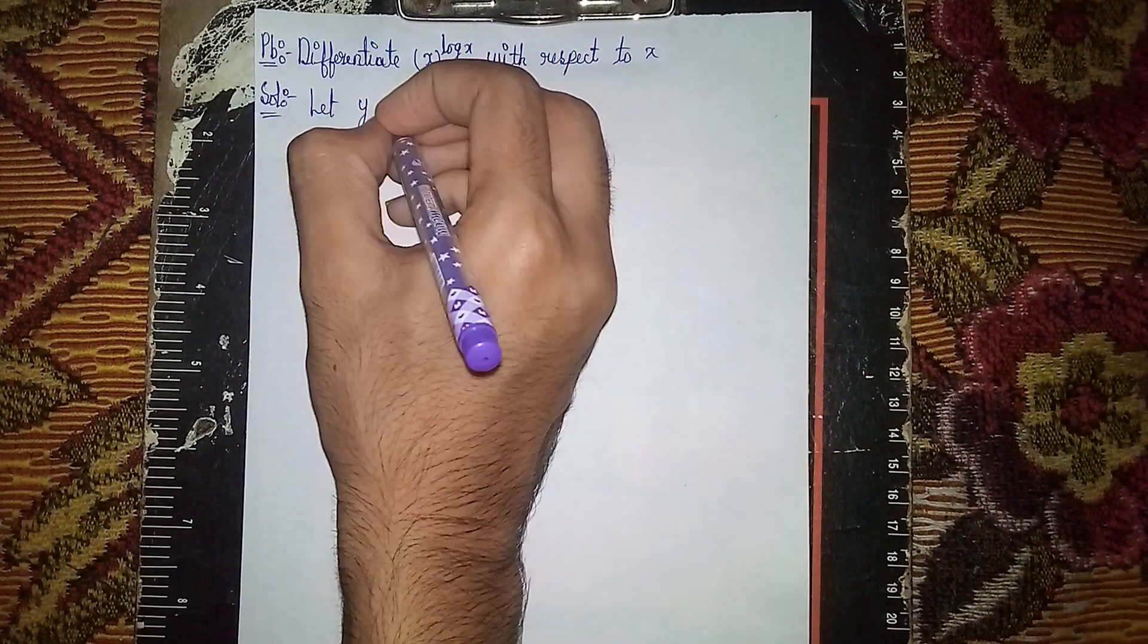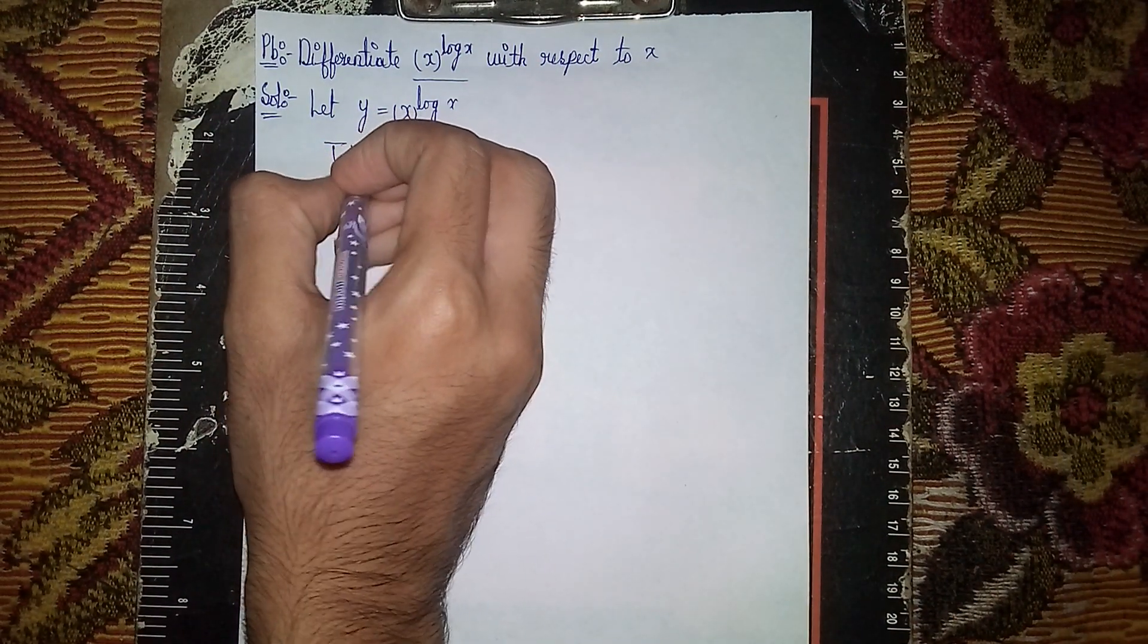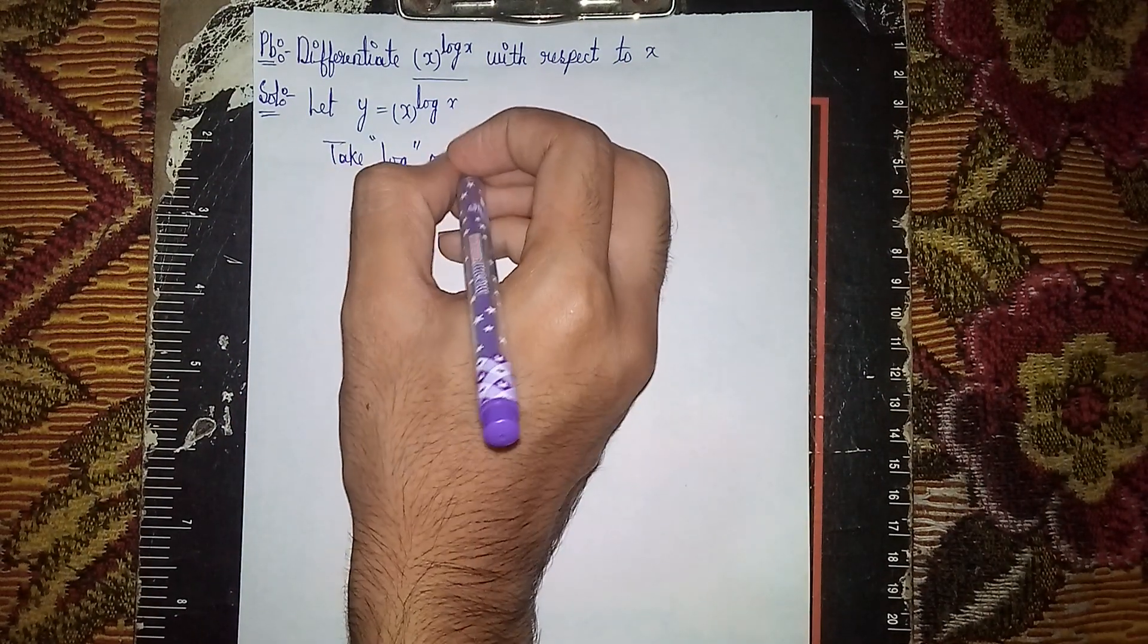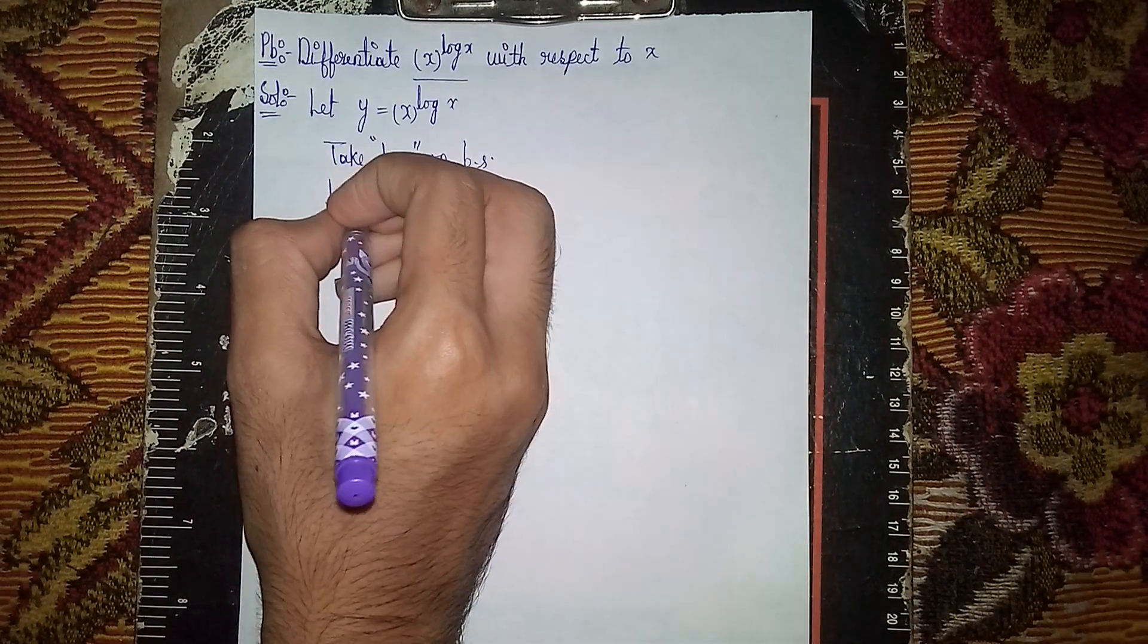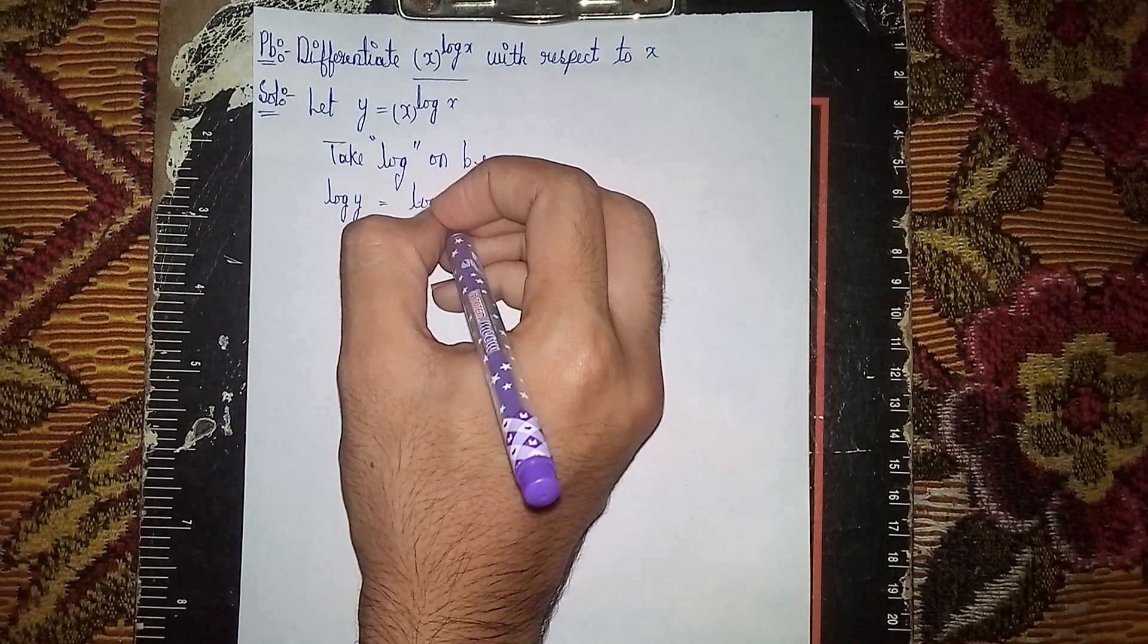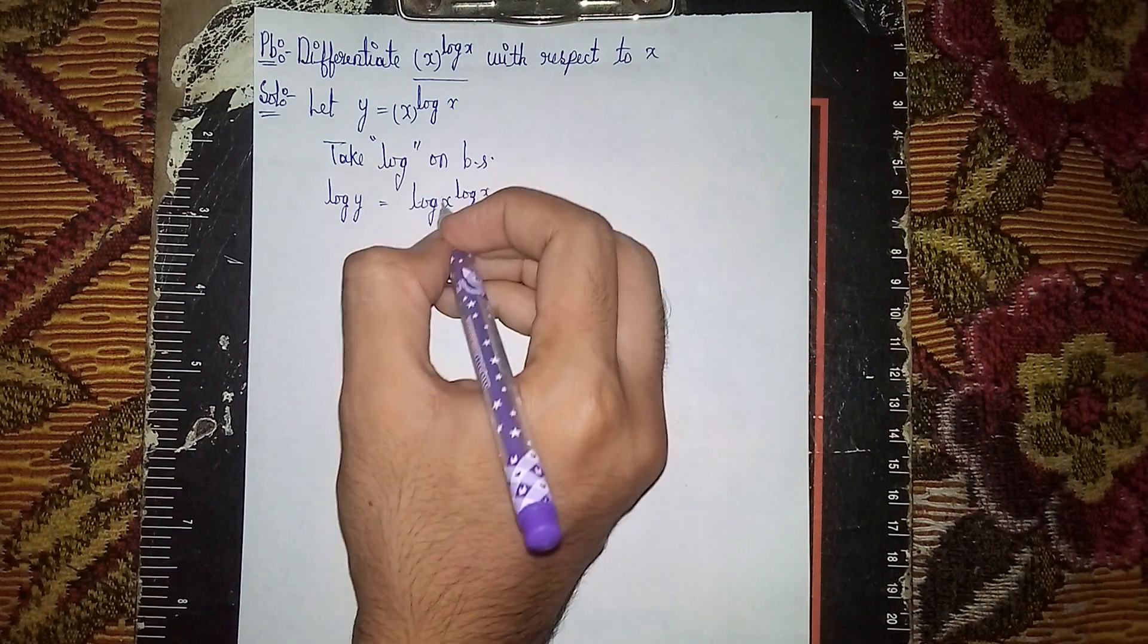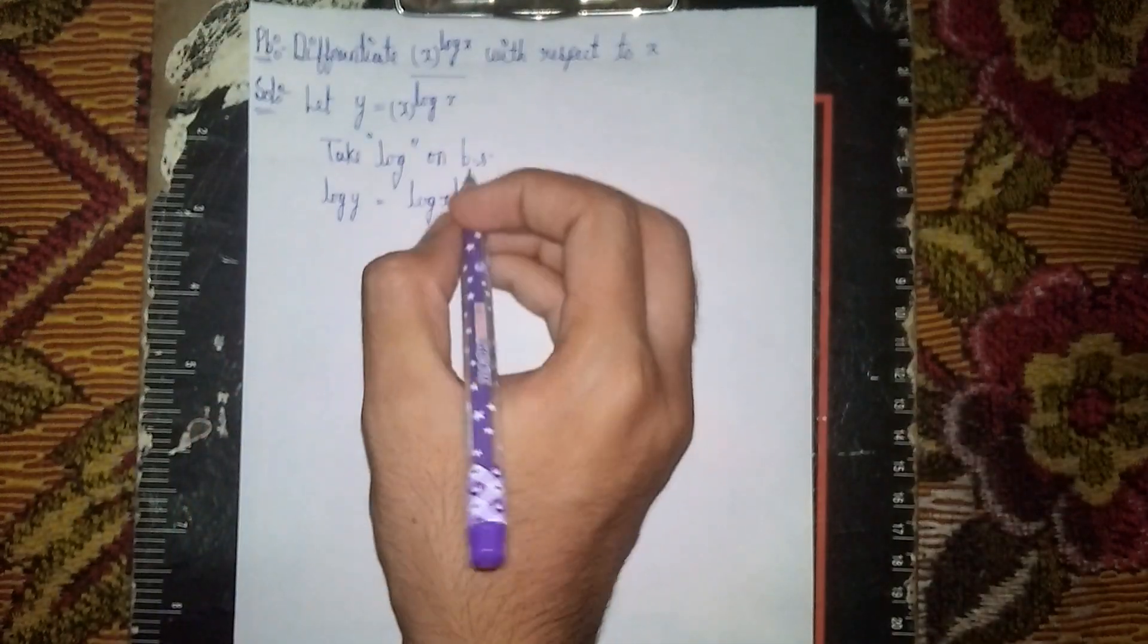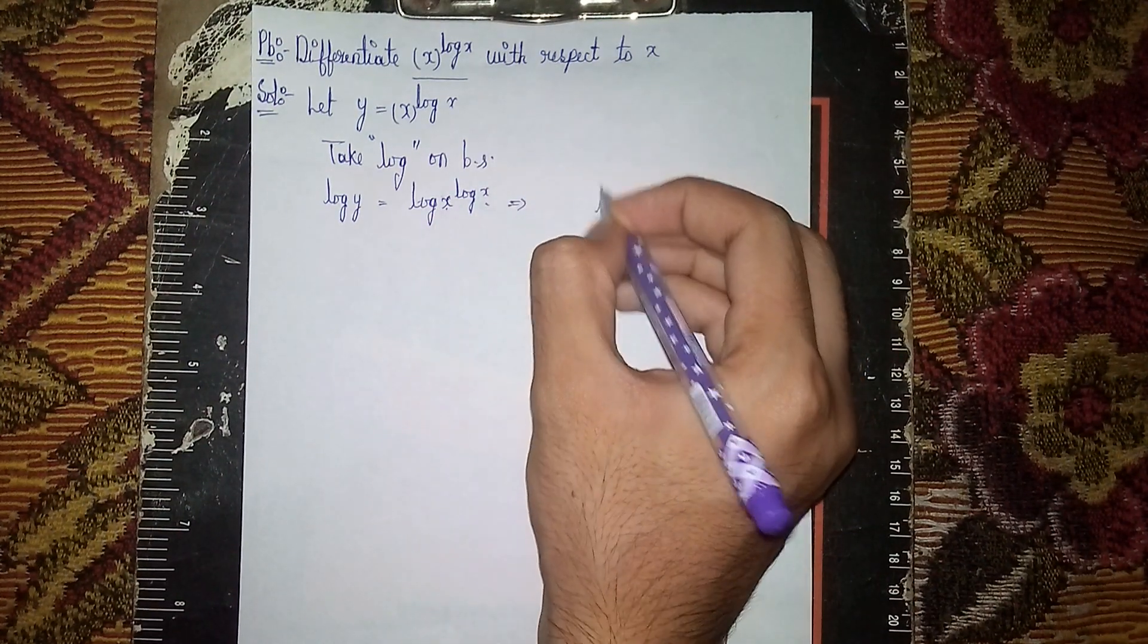Now take log on both sides. Taking log on both sides, we get log y = log(x^(log x)). You can see it's in the form of log(x^n).